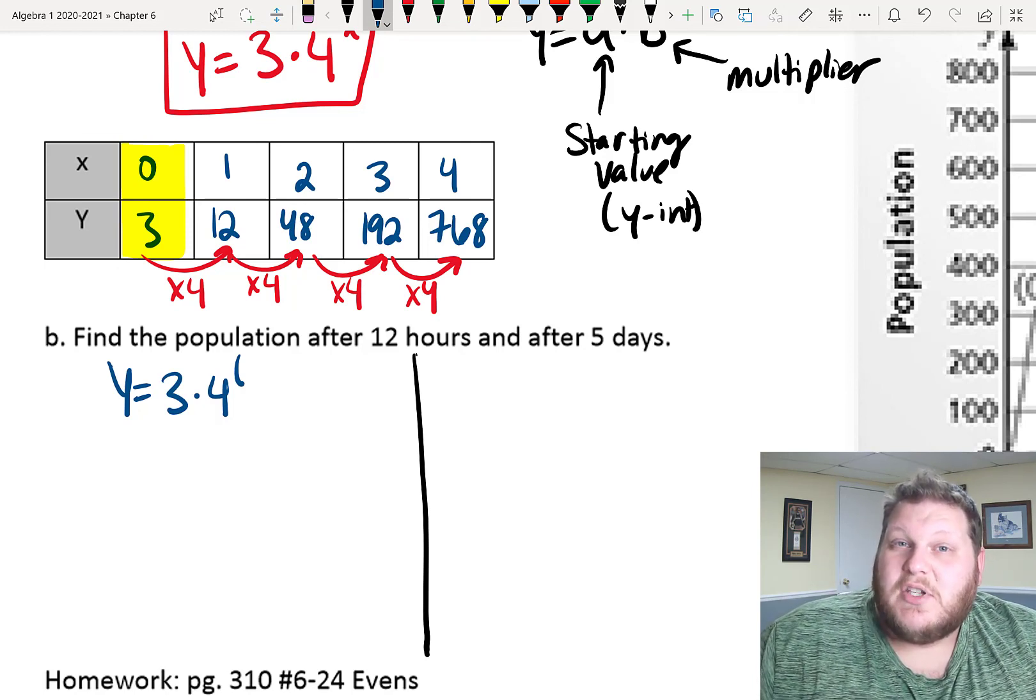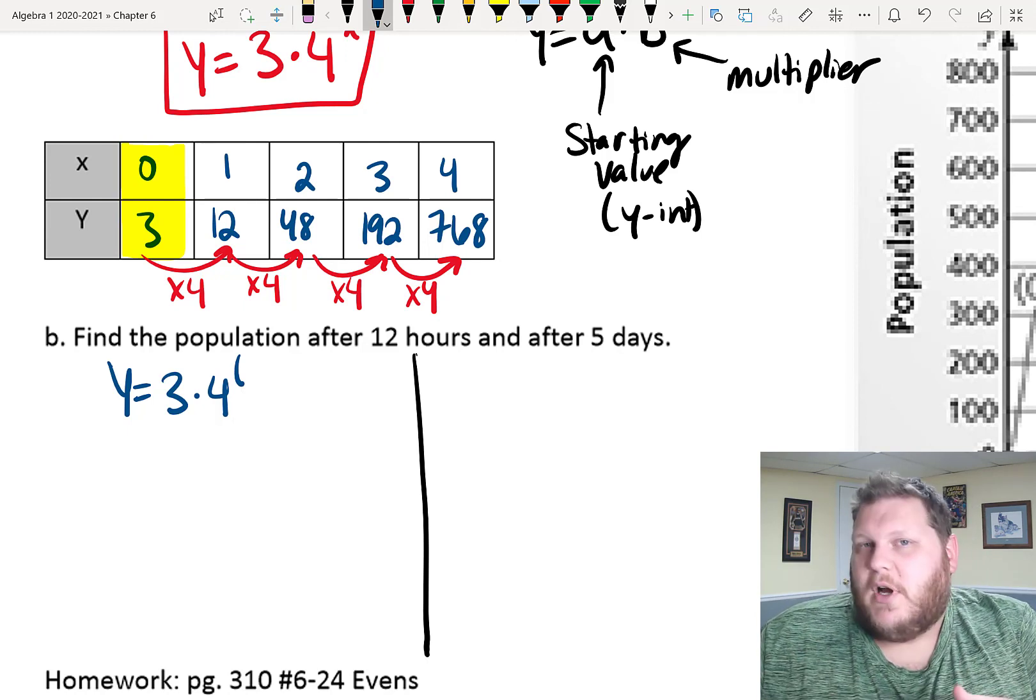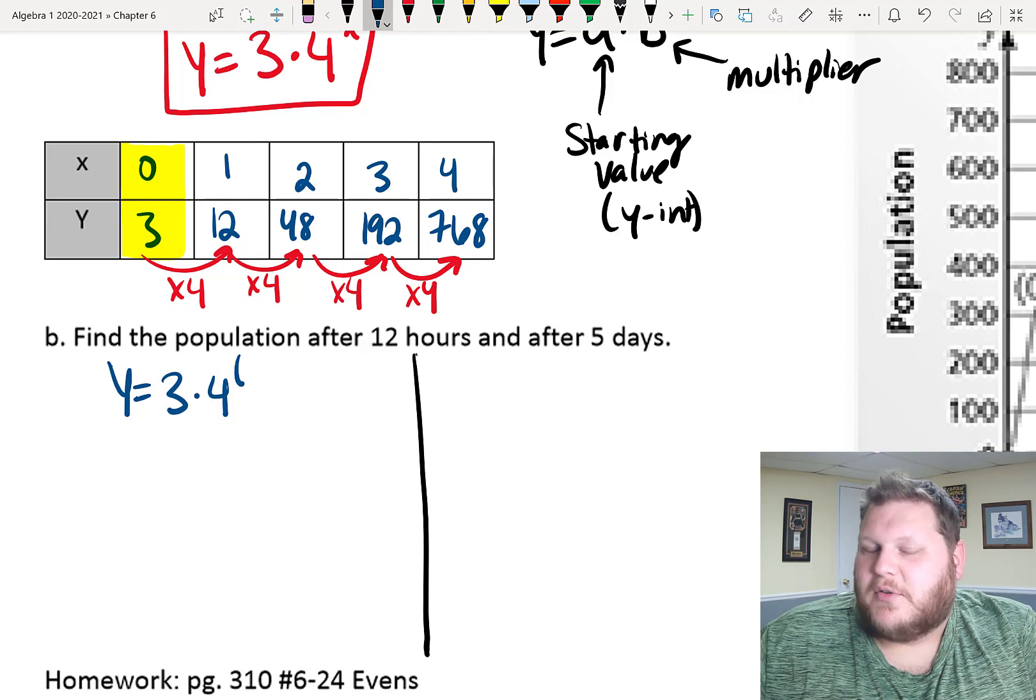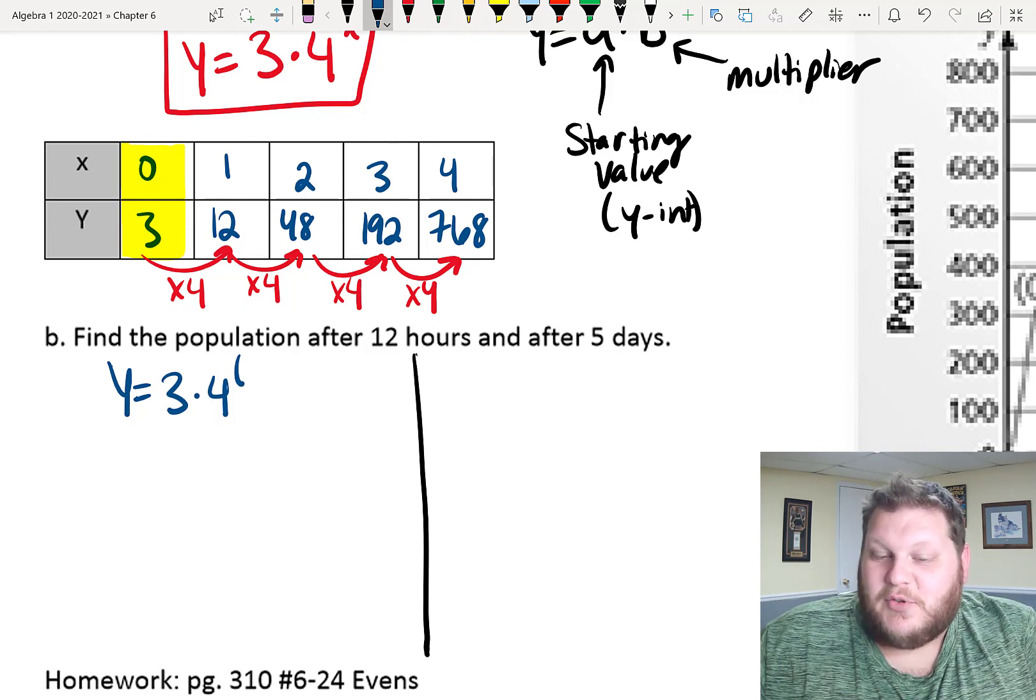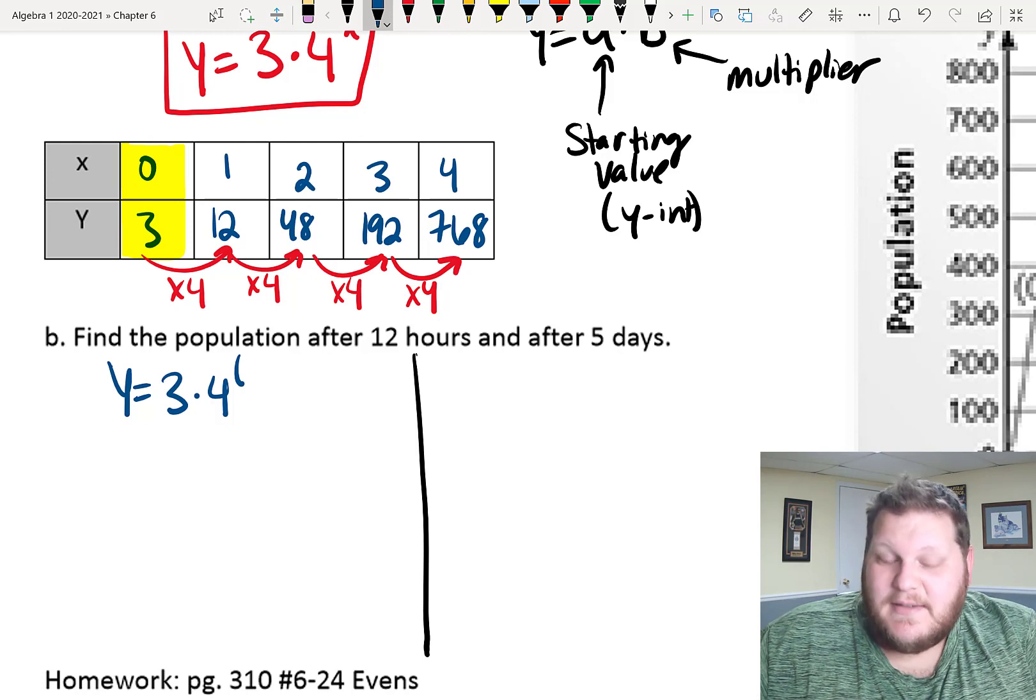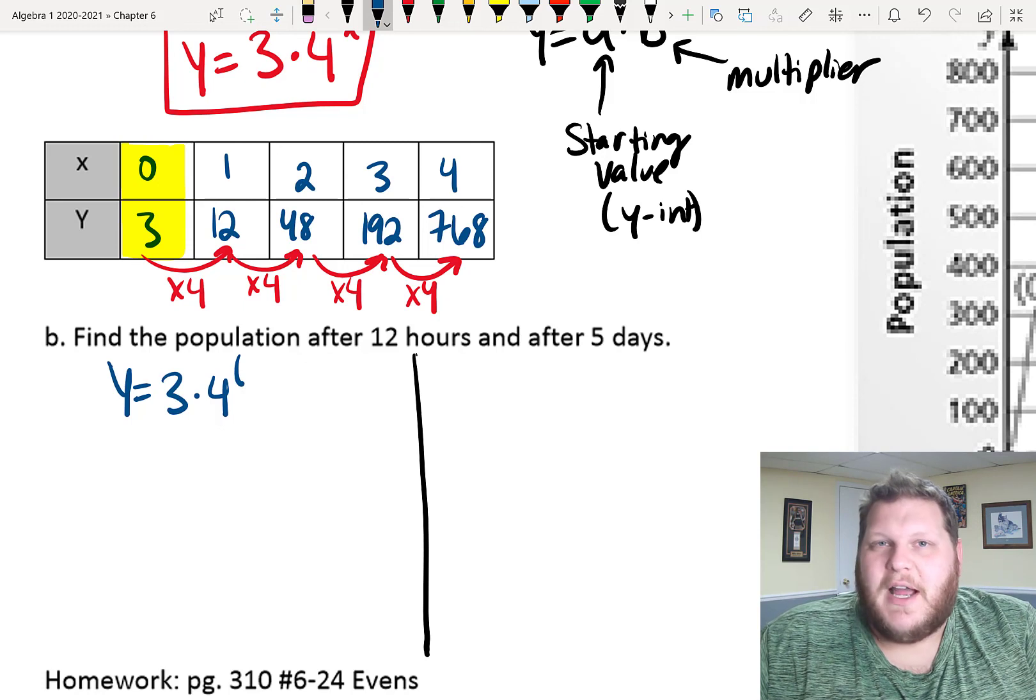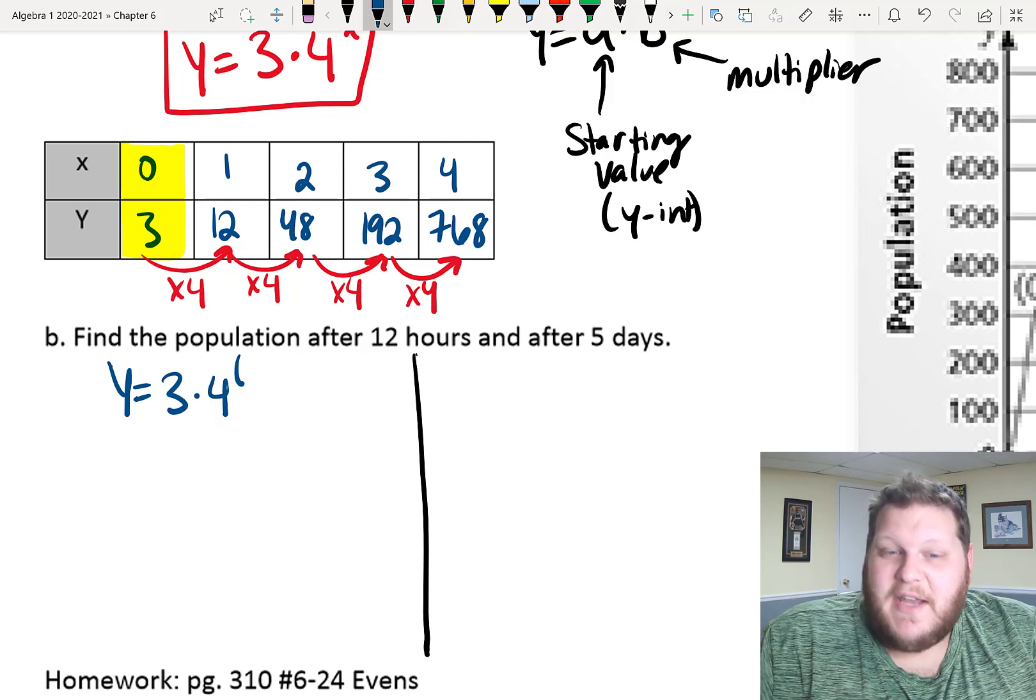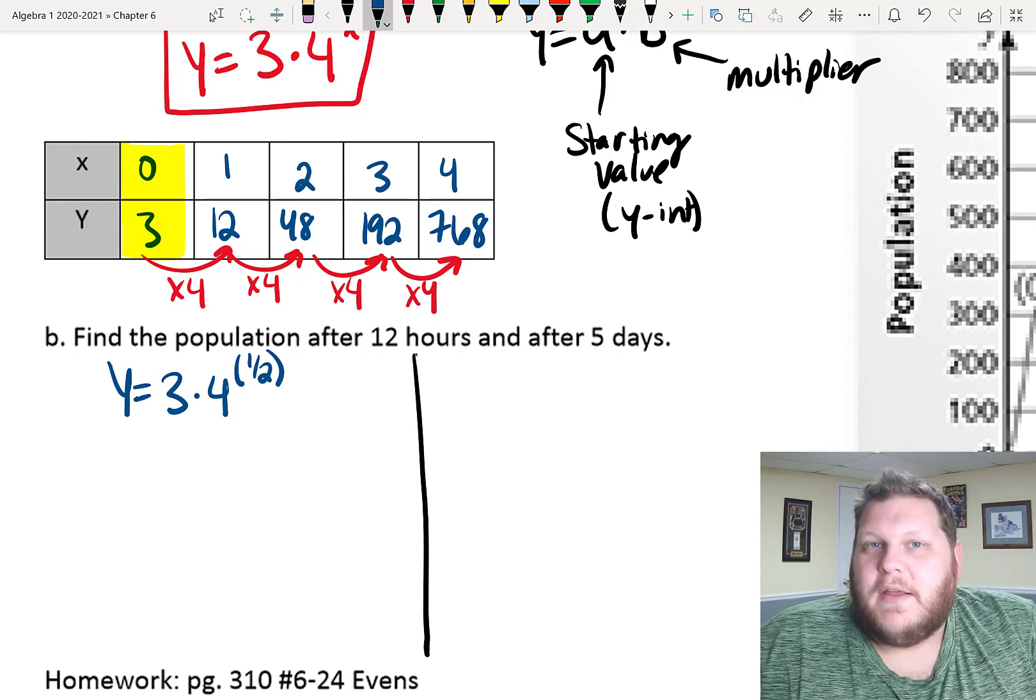So, I can't plug in 12, because it hasn't been 12 days. It's only been 12 hours. So, hopefully we all know that a day is 24 hours. I'm hoping I'm not just assuming that, and people don't know that a day is 12 hours. It is. Which means that a day is 24 hours, which means 12 hours is half a day. Right? So, we're plugging in a half in there for my x-value.